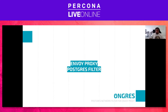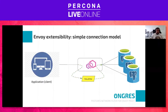Envoy proxy is a middleware between a client application and a server application. Its extensibility gives us the ability to use a TCP proxy filter. To connect the client to Postgres, Envoy just needs a TCP proxy filter extension to create a TCP-level connection between the application and the Postgres server, and the application takes advantage of Envoy's extensive backend features.